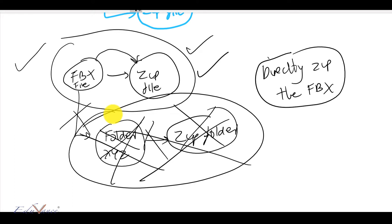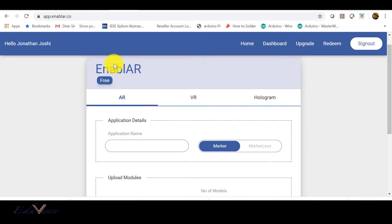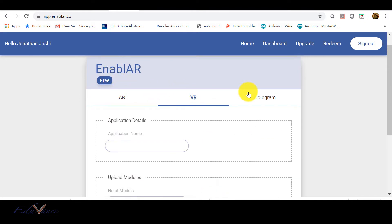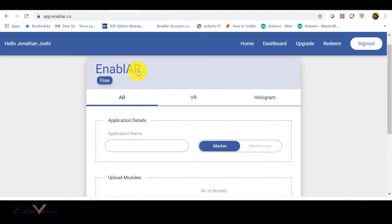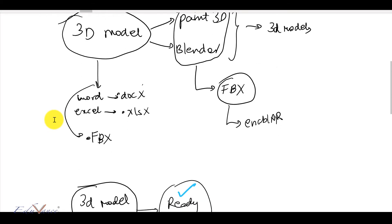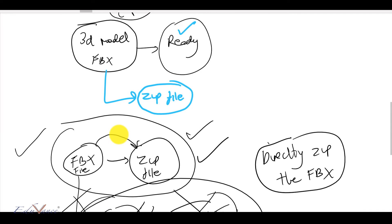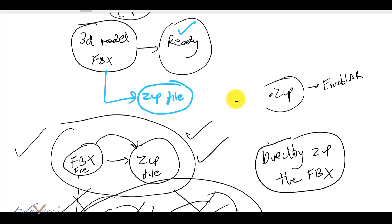In the next lecture I will show you how to take these 3D models and create an AR, VR, or hologram app using our Enabler website. In today's lecture we understood how to take a 3D model and get it ready for Enabler: take the FBX file and zip it directly into a ZIP file — directly — and then use that ZIP file on Enabler. I hope this was clear. See you in the next lecture, thank you.